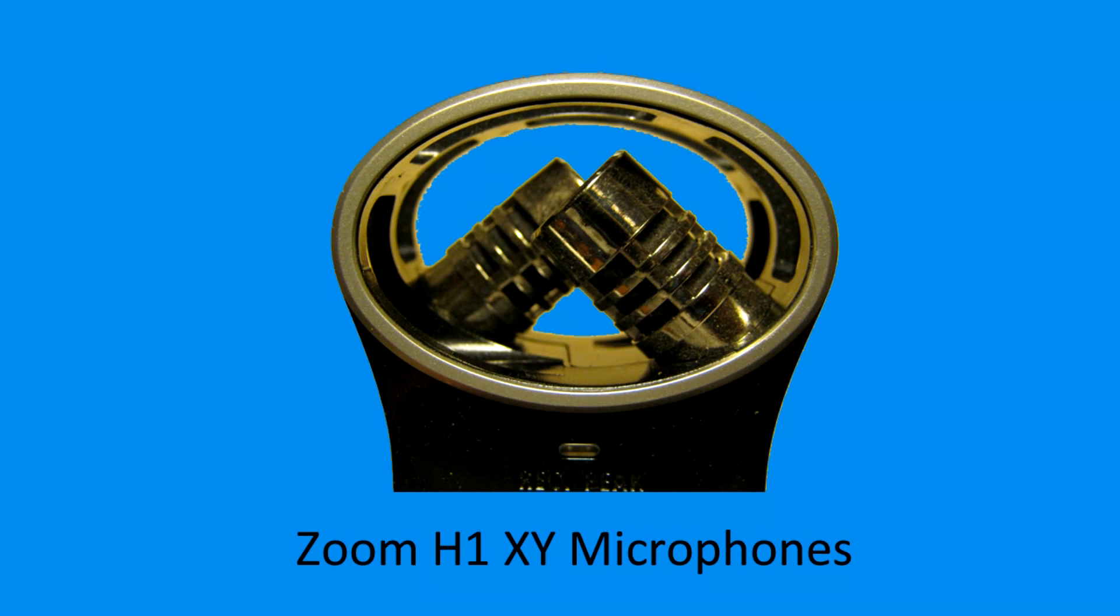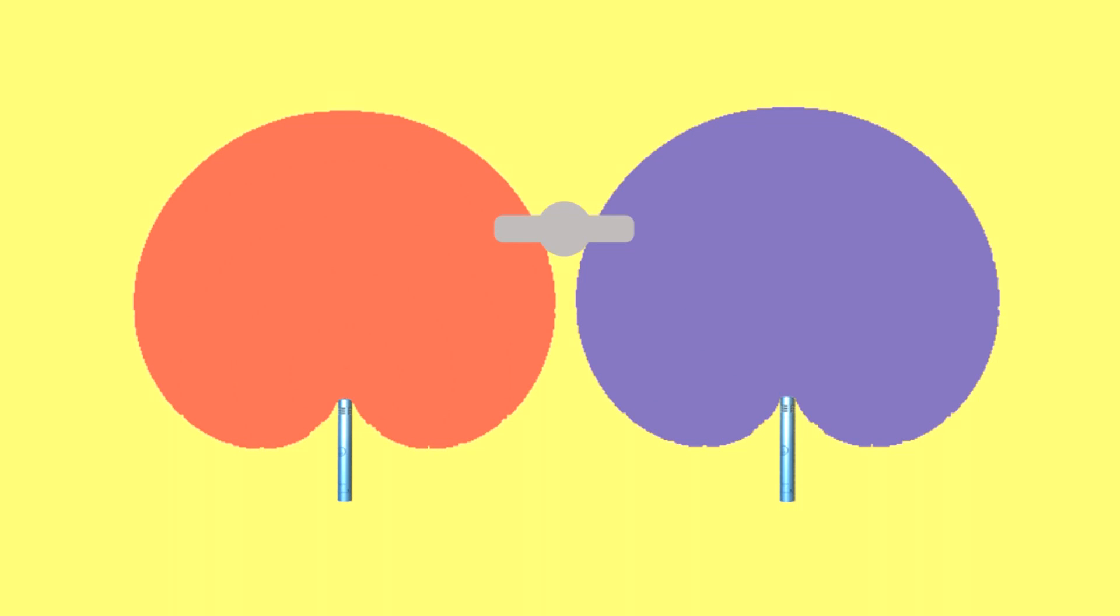utilized the XY microphone configuration for stereo recording. In the XY microphone configuration, two cardioid microphones are positioned at intersecting angles to each other. If sound is directed at the intersection of both microphones, they will record evenly and simultaneously.